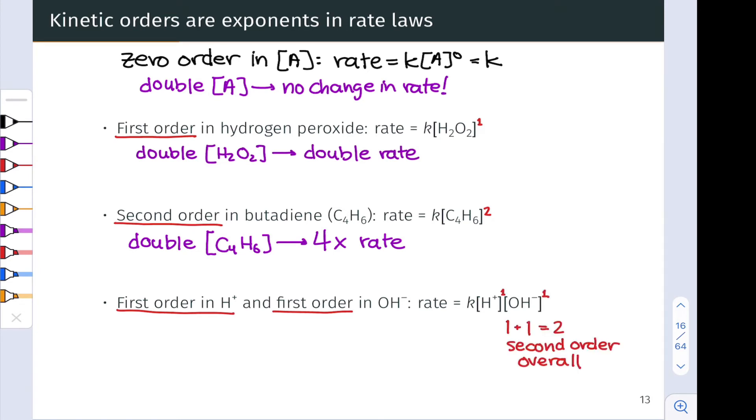but the overall order of the reaction is two, one plus one. What happens if I double the concentration of H+ or OH-? Well, each of those individual kinetic orders is one. So doubling either of those will result in a doubling of the rate.